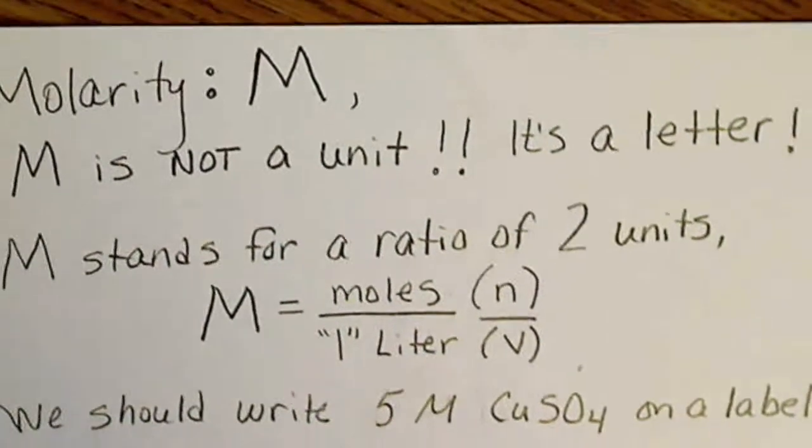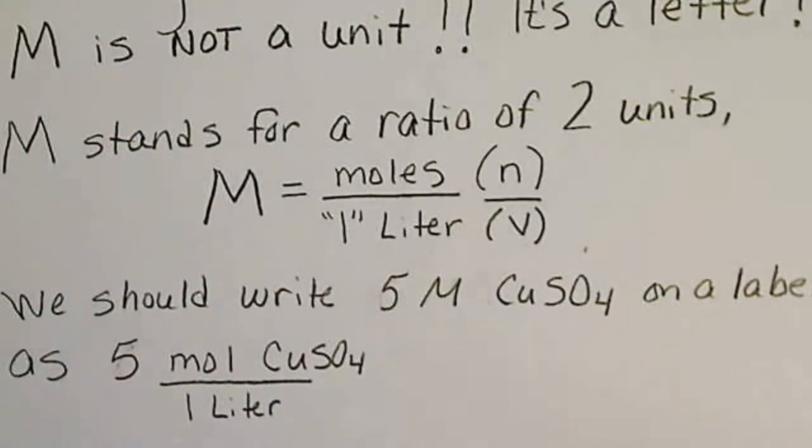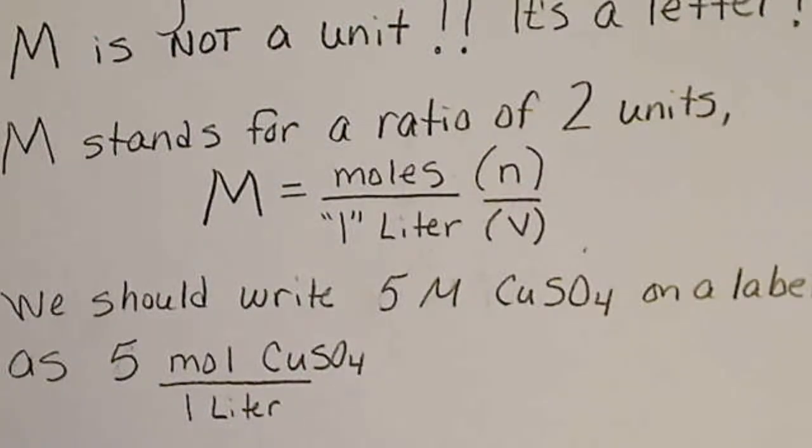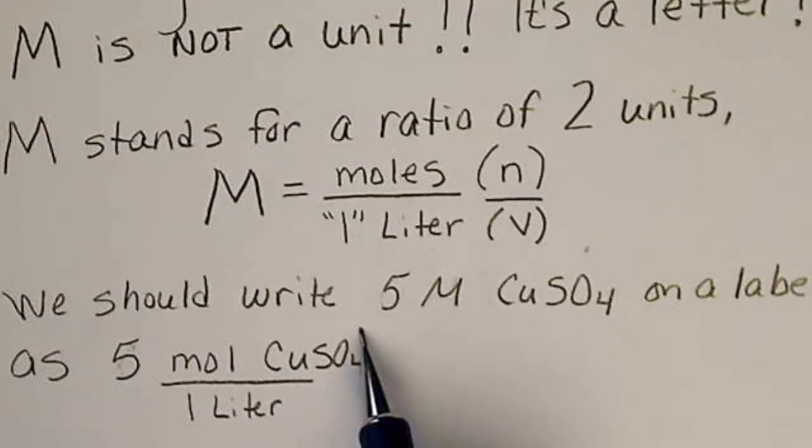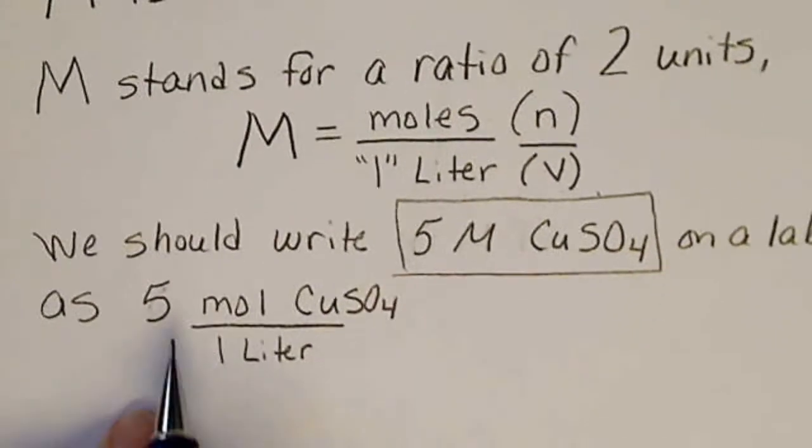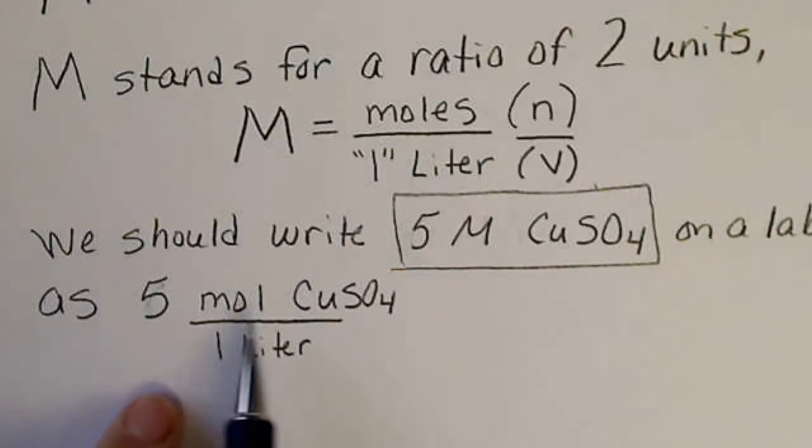So for example, we looked at a bottle that was five molar copper sulfate. What we should write instead of writing 5M CuSO4 on the label, we should write that there's five moles of copper sulfate per liter.